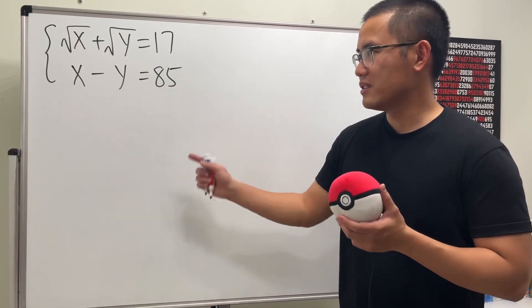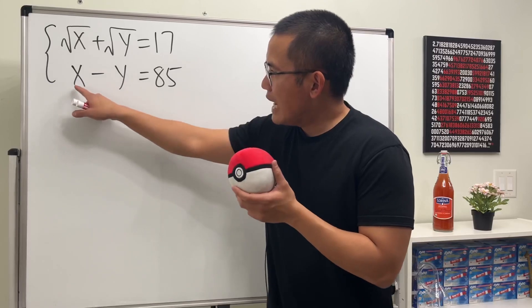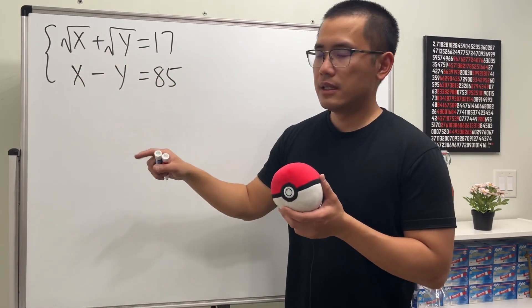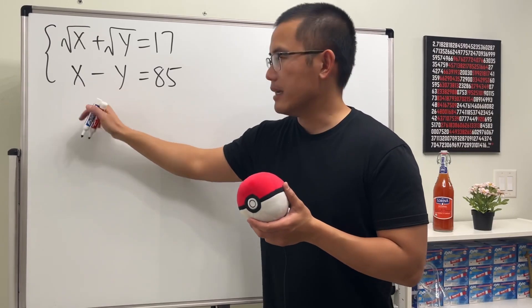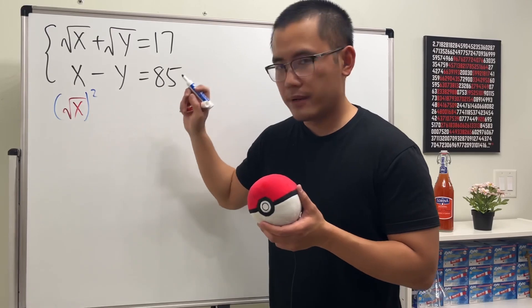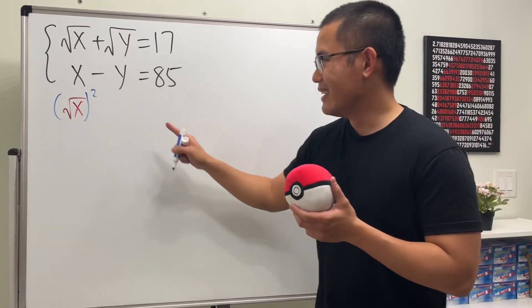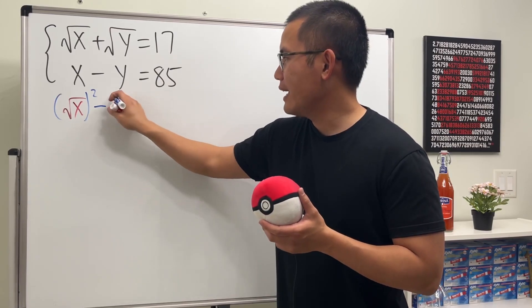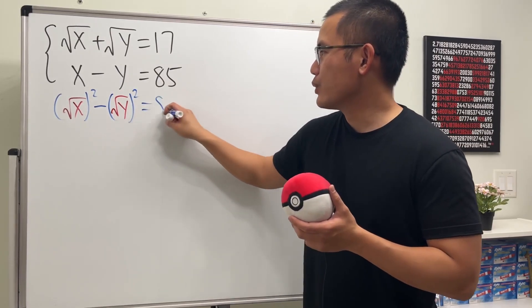Here we have x minus y, and these are square roots. Yeah, x is the same as square root of x squared. Maybe some of you can see this already. Minus y is the same as square root of y, and then we square, and this is equal to 85.